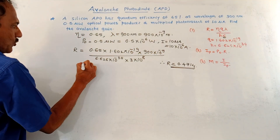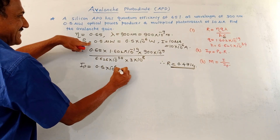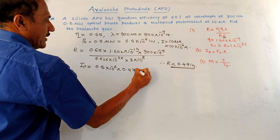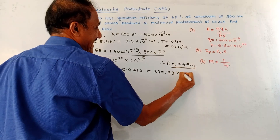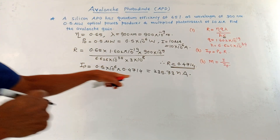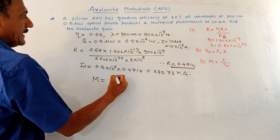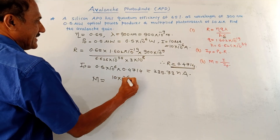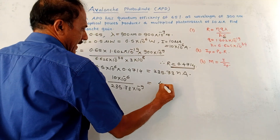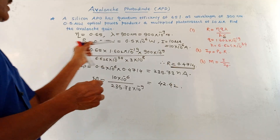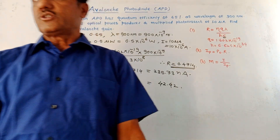IP = P0 × R = 0.5 × 10⁻⁶ × 0.4714, which gives IP = 235.73 nanoamperes. Remember this value is in nanoamperes, that is 10⁻⁹. Last calculation: gain or multiplication factor M = I / IP = (10 × 10⁻⁶) / (235.73 × 10⁻⁹). Solving this, the answer is M = 42.42. This is the way numericals are solved as far as APD is concerned. Dear students, that's it for today's session. Thank you for watching this video.